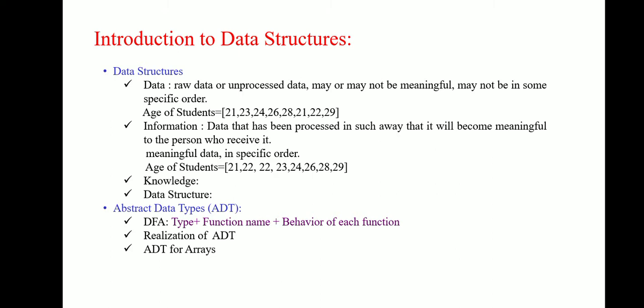This is called information. Knowledge is basically something which a person knows. Knowledge requires a person to understand what information is based on their experience and knowledge base. Data structure is a particular way of organizing data in a computer so that it can be used effectively.